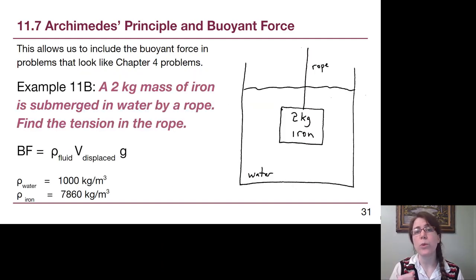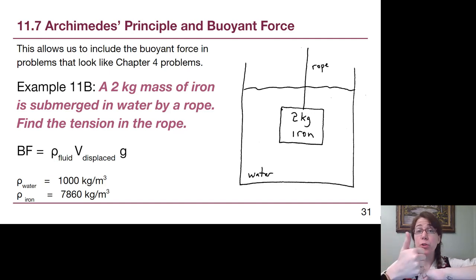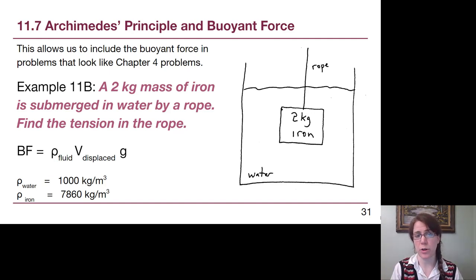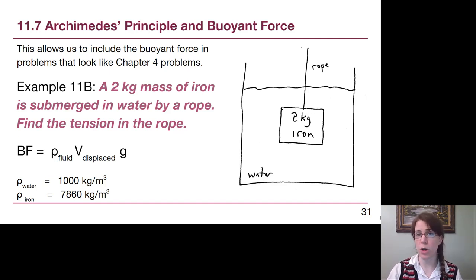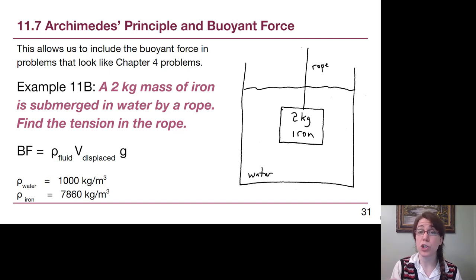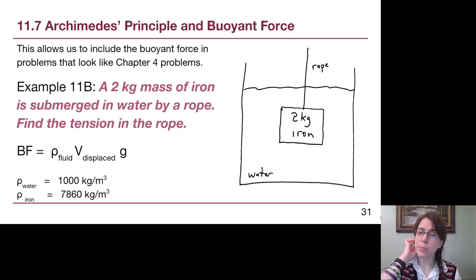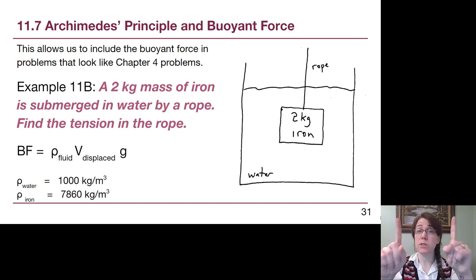When gravity down and buoyant force up don't balance each other, we can introduce a third force to bring them into balance so the object is not moving. These problems are going to look a lot like chapter four problems — the big difference is that buoyant force is now a new force we draw into our force diagram, and we have to calculate the volume of the object. For example, we have a two kilogram chunk of iron submerged underwater. The iron is denser and will sink if the rope is cut, so the rope tension plus the buoyant force together balance gravity downwards. We'll see this full example in a separate video.